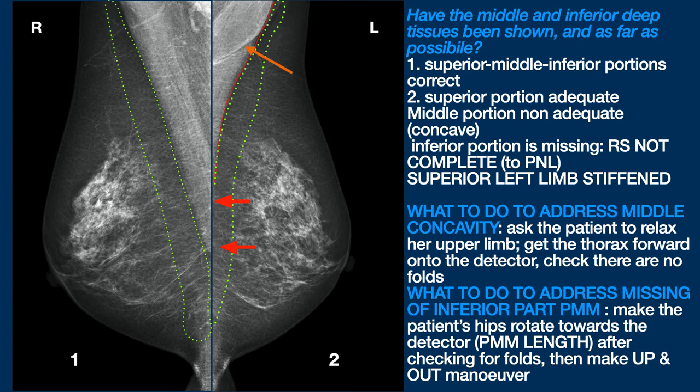The corrections to be made are: first of all, ask the patient to relax the whole upper limb and let us guide her without her making any movements on her own. Then check that no folds have been formed behind, and then make her rotate her hips laterally to reach the deep medial tissues, bringing them onto the detector so as to gain more muscle in length. Then perform the up-and-out manoeuvre.